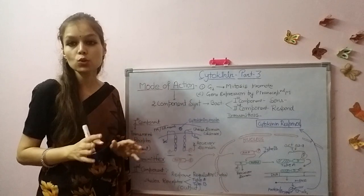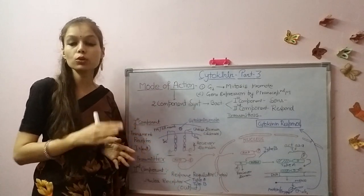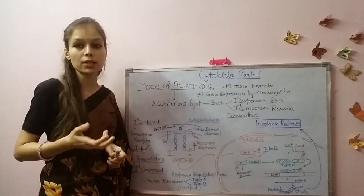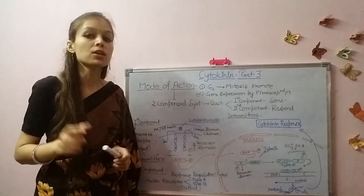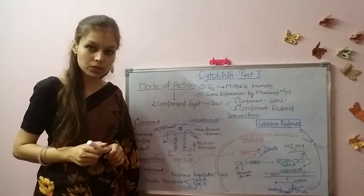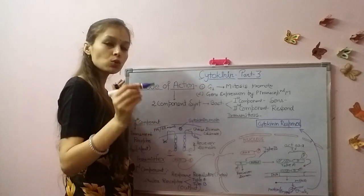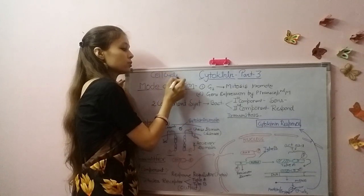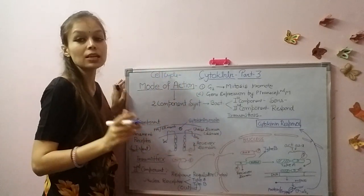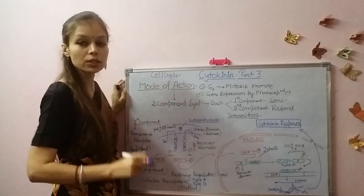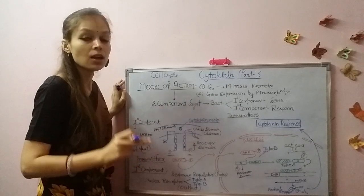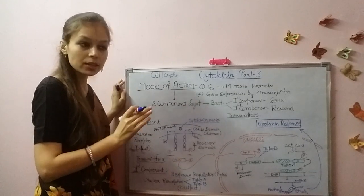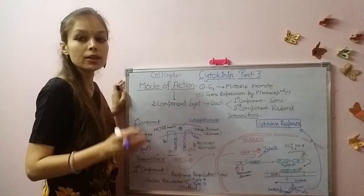Cytokinin is named for cell division because it works as a main player — it activates and promotes cell division. The cell cycle has two parts: karyokinesis, which means nucleus division, and cytokinesis, which means cell division. First the nucleus divides, and then cytokinesis occurs.